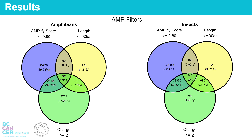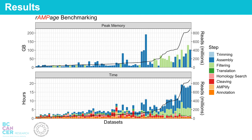Here we see the peak memory usage and runtime of Rampage along the y-axis and the datasets arranged from least to most reads on the x-axis. With datasets of less than 1 billion reads, results can be obtained in less than 20 hours with less than 200 gigabytes of memory. Datasets with greater than 1 billion reads can be subsampled to use less resources and less time.